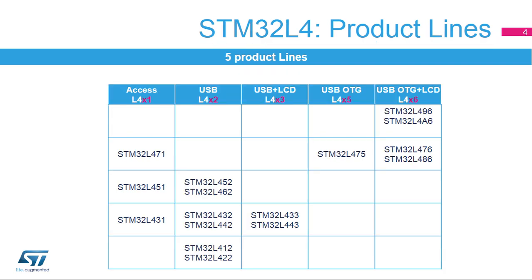This table shows a list of all available product lines. The documentation provides a reference manual covering one or several product lines mentioning the differences for each product. A data sheet is available for each product reference in the table.